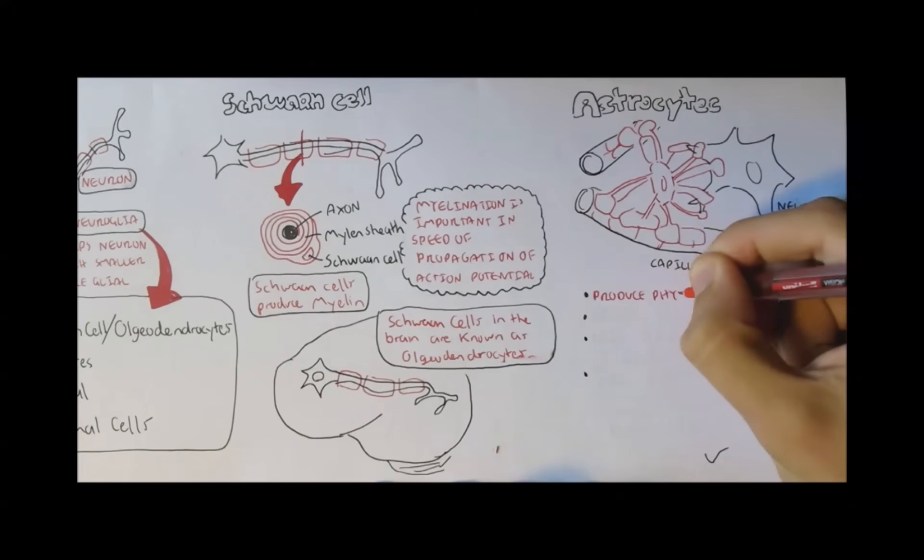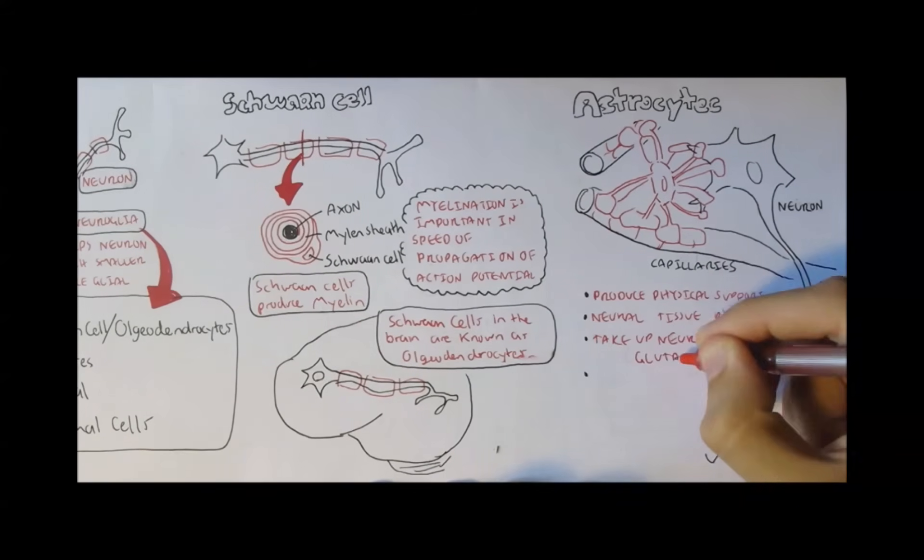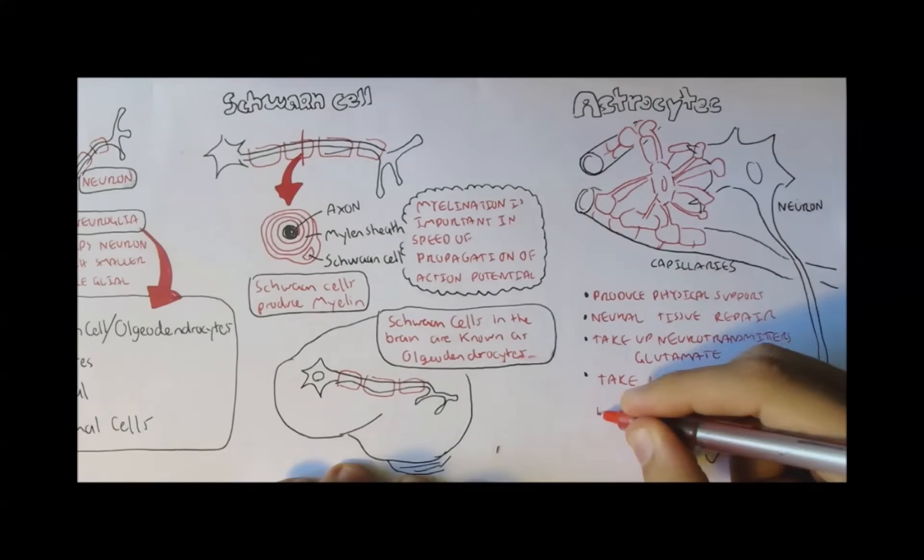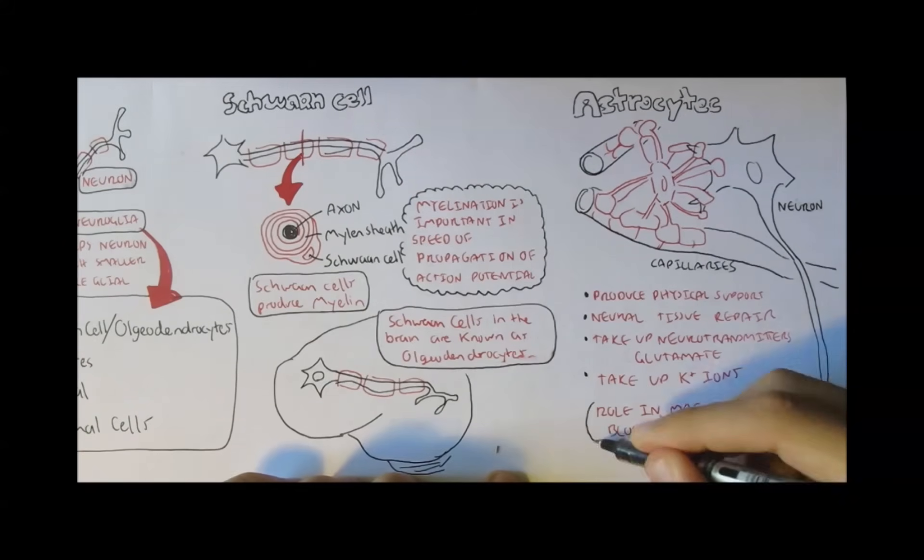So astrocytes provide physical support. They help in tissue repair. They help in the uptake of certain neurotransmitters such as glutamate. They help the uptake of potassium ions. And most importantly, they have a role in maintaining the blood-brain barrier, which we will look into more closely later on.